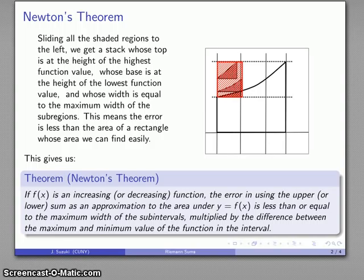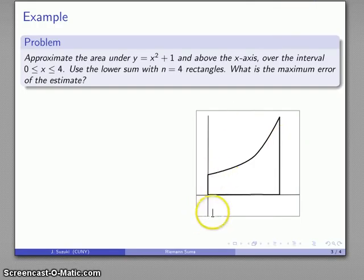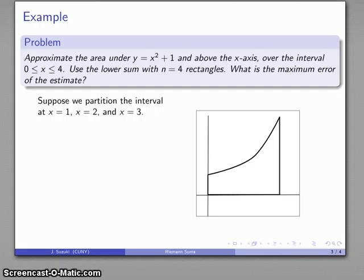That's wonderful news because it means that for any partition of the interval I can tell you what the maximum error is, and with any luck the actual error will be less — hopefully significantly less — than the maximum. So for example, let's take a look at the graph y equals x squared. I'm going to look at the region under that graph, above the axis, over the interval from 0 to 4, using the lower sum with n equals 4 rectangles, and then find the maximum error of the estimate.